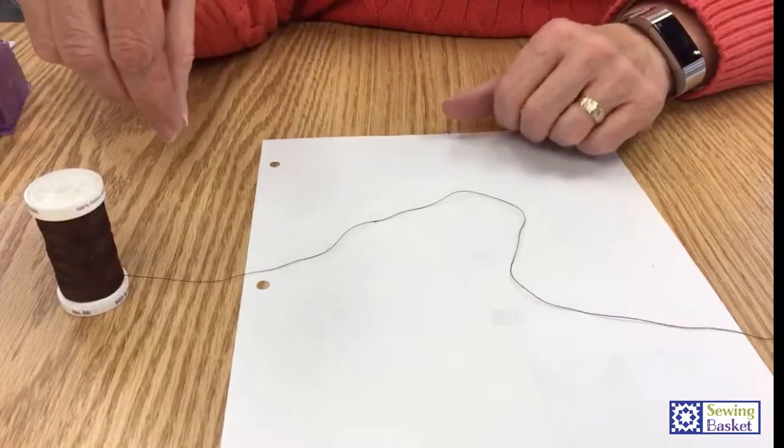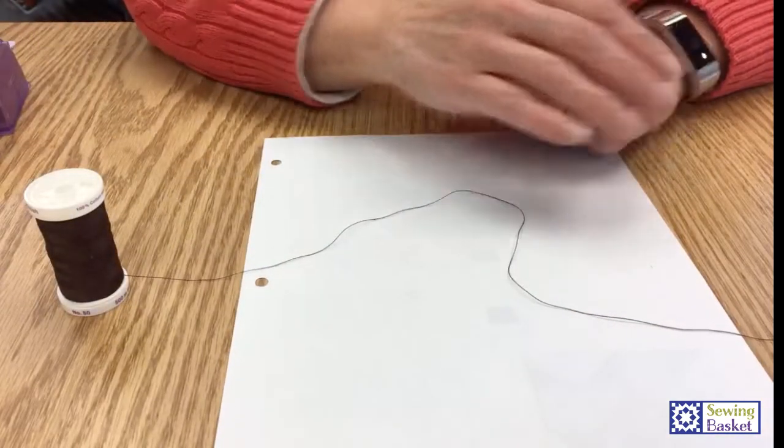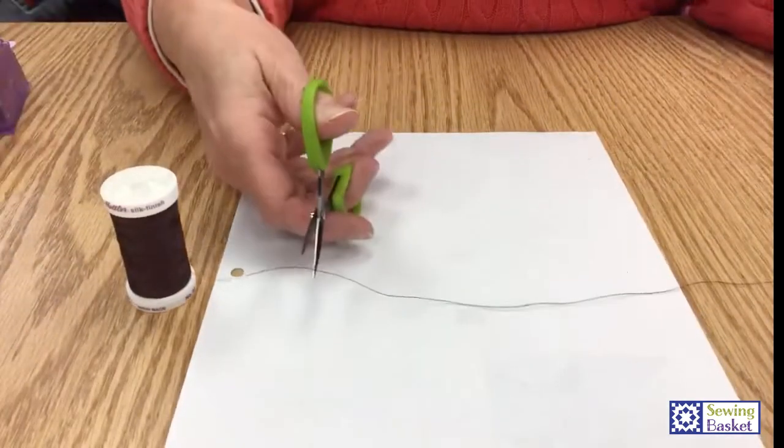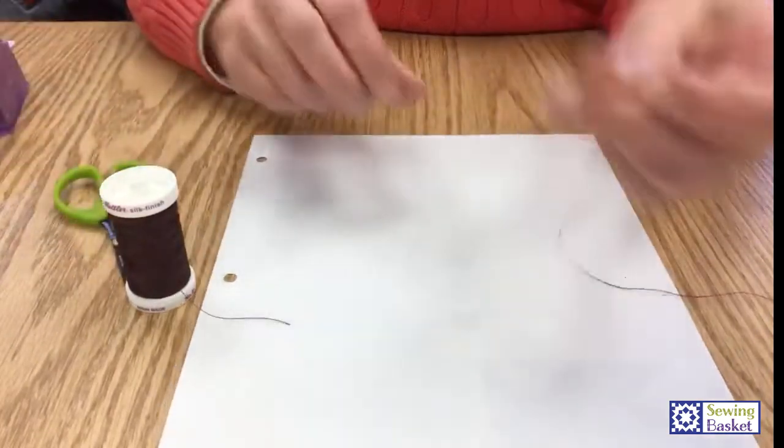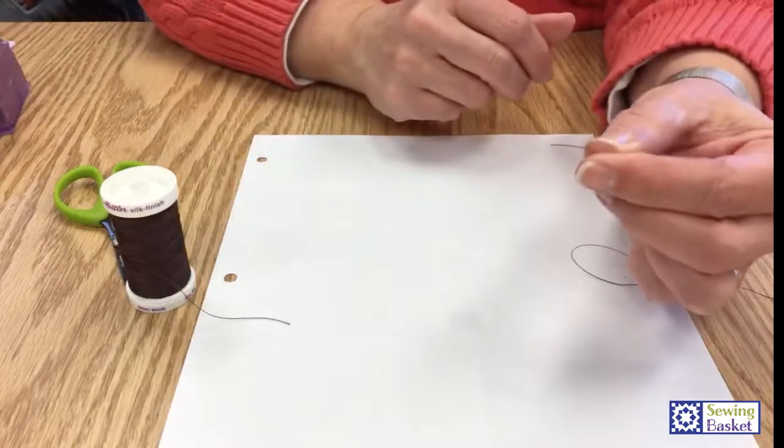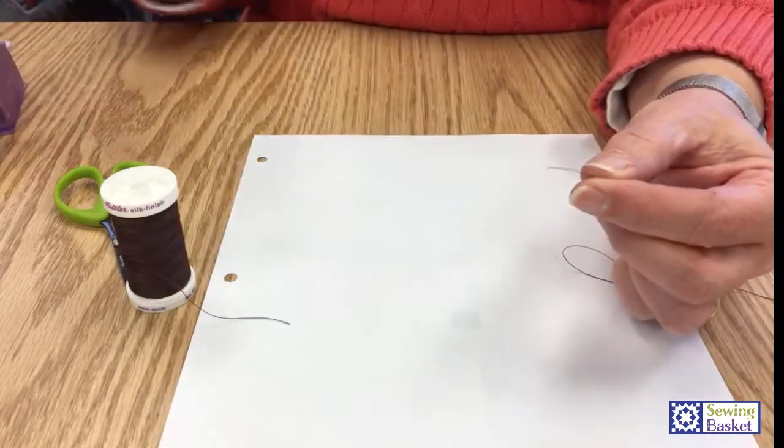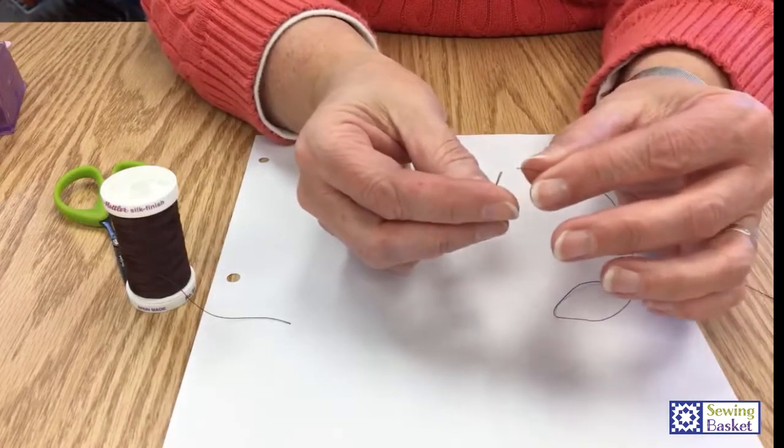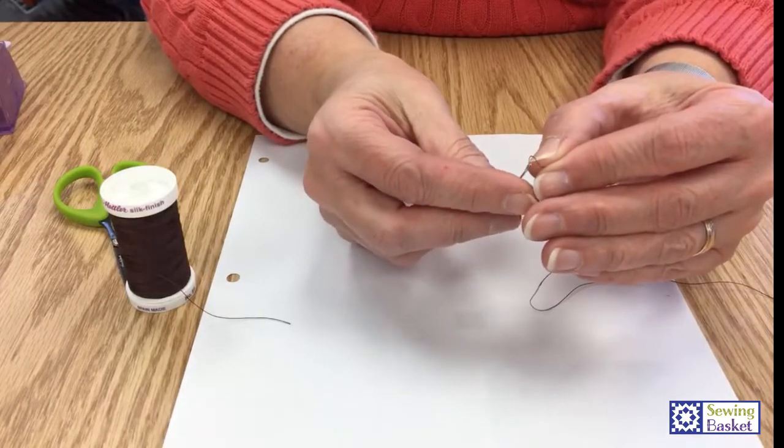What most people do is they pull the thread, cut it, and this happens to be the side that's in your hand when you cut it. Then they want to thread this end. What you're doing is you're threading it against the grain.